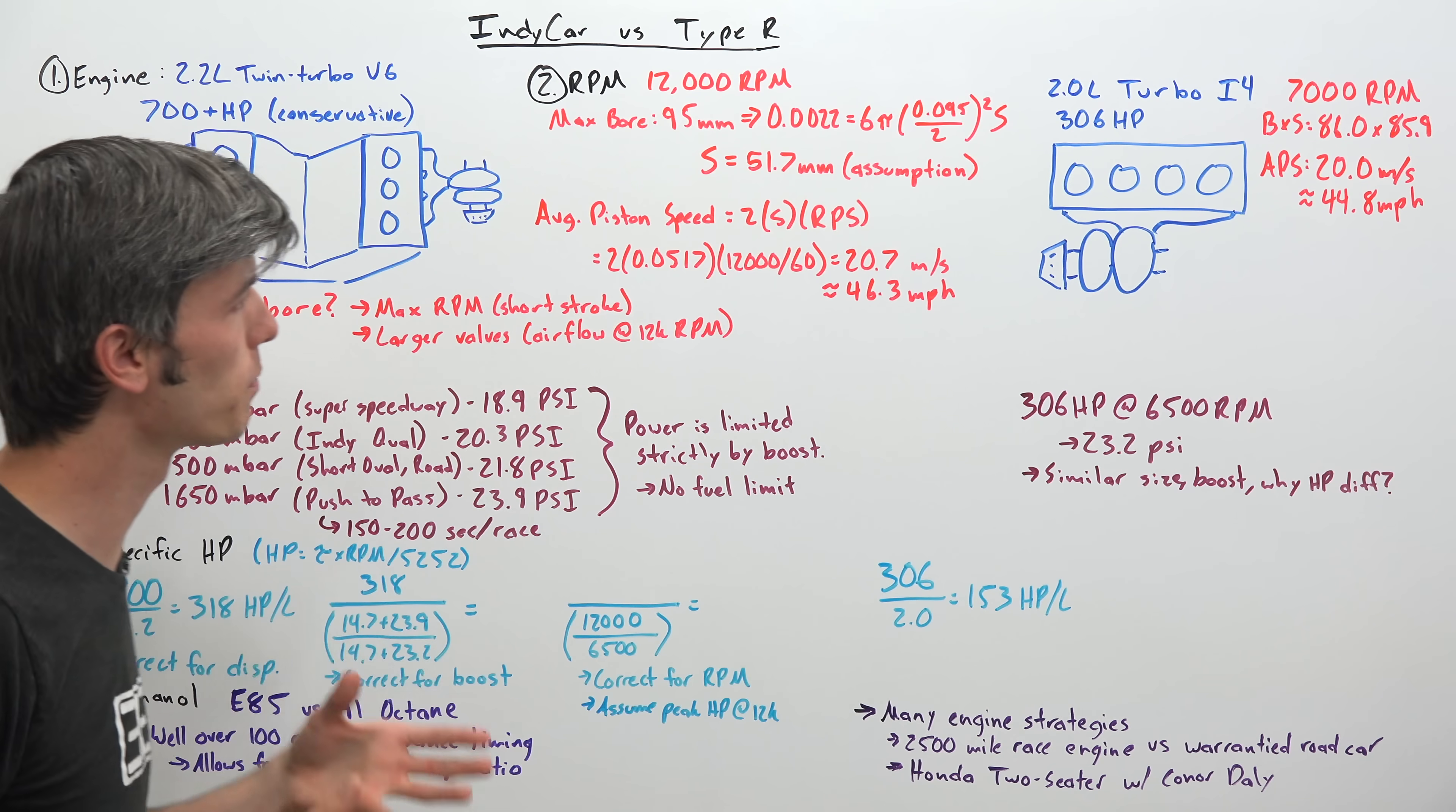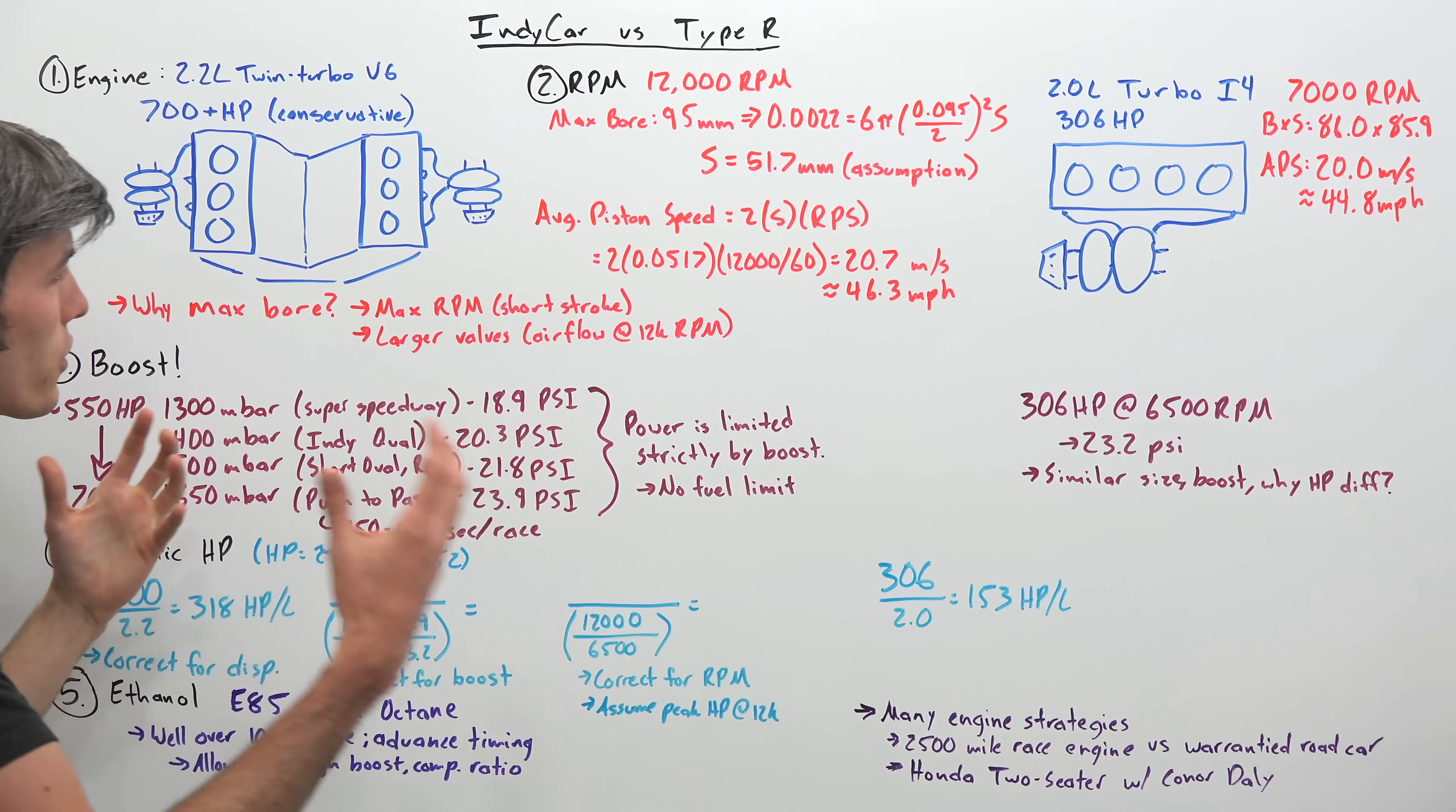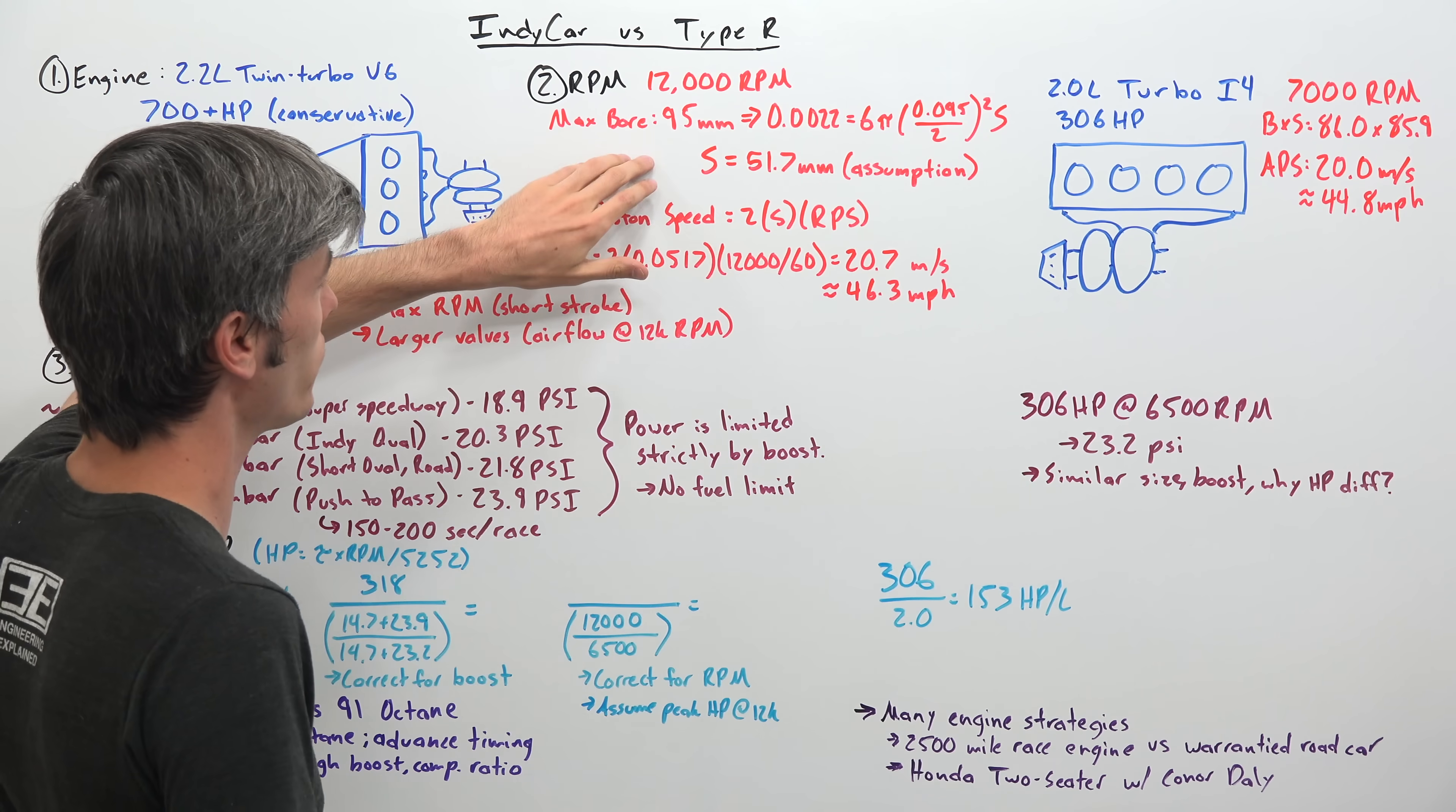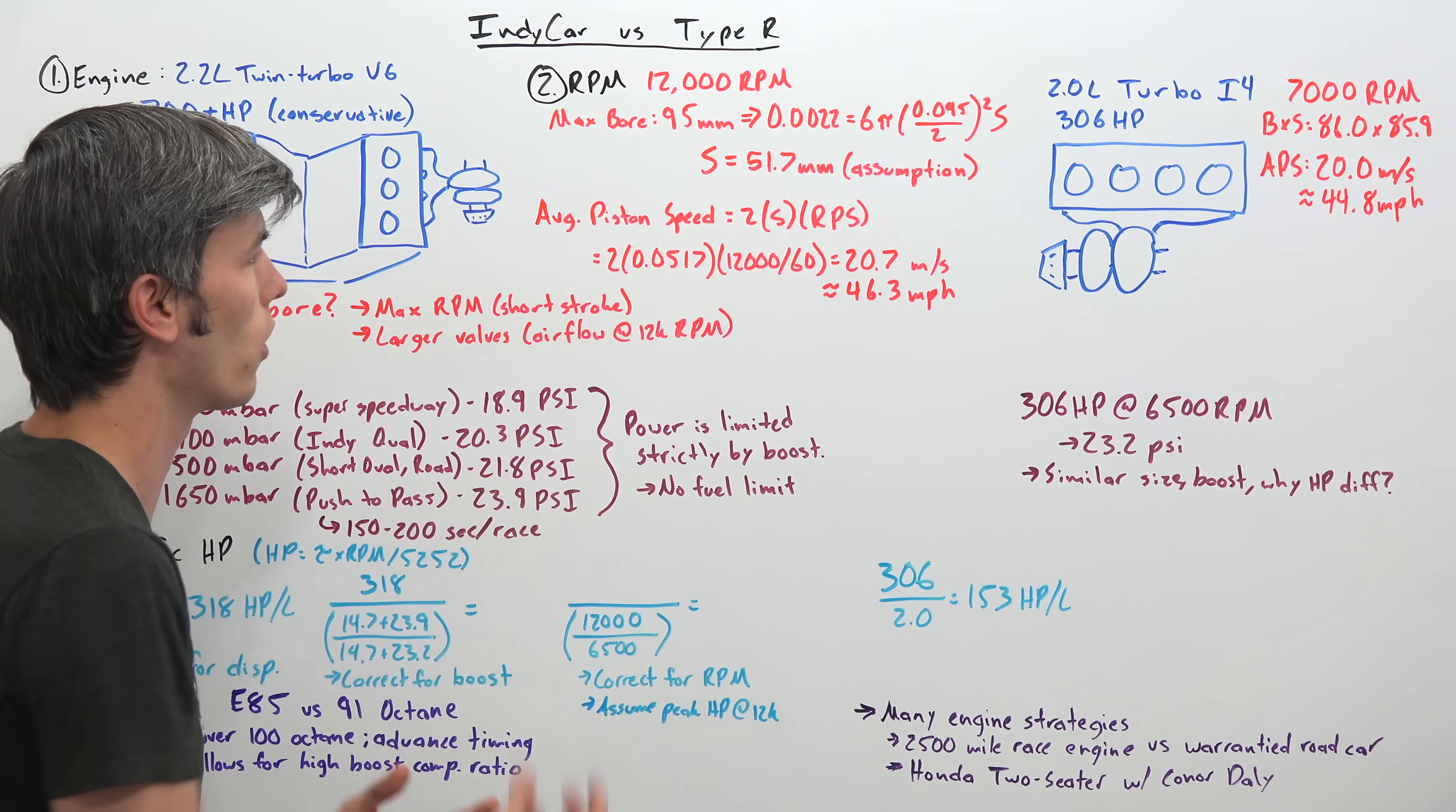Now one of the major differences between these engines is how high they rev. So the Indy engine, the 2.2 liter, revving to 12,000 rpm while the Type R engine is revving to 7,000 rpm. And so within IndyCar the rules allow for a maximum bore size of 95 millimeters. Now we don't know what Honda is using for their engine, but assuming they're using that maximum bore then we can do some math and find out that the stroke of that engine is 51.7 millimeters. And so why would you want this short stroke?